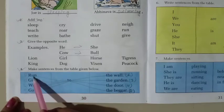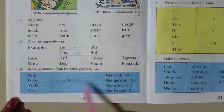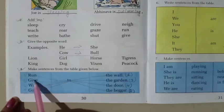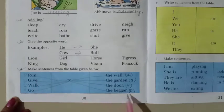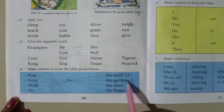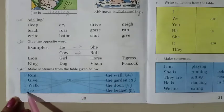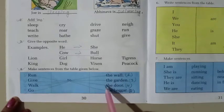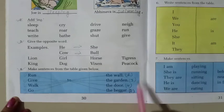Number one. Run. Run to the wall. Number two. Give to the beggar. Number three. Walk to the garden. Number four. Go to the door. So I have to write the number here so you can understand it easily.